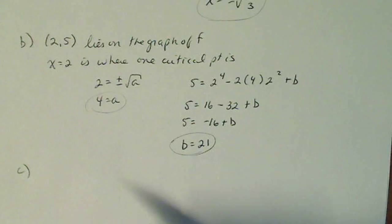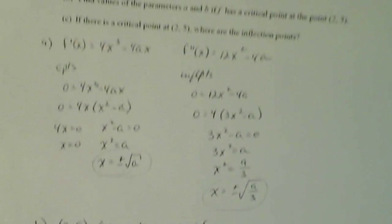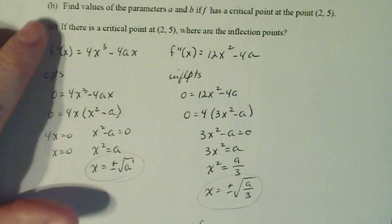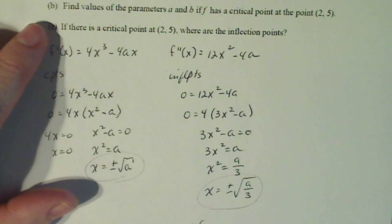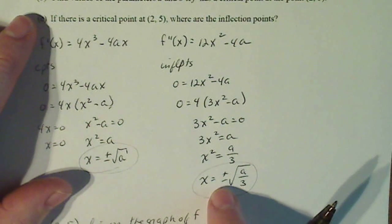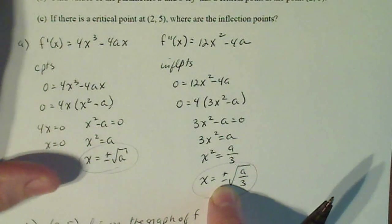Now part c says, if there is a critical point at (2, 5), where are the inflection points? Well right here I know that x equals plus or minus square root of a over 3 is an inflection point. I know that a is equal to 4.